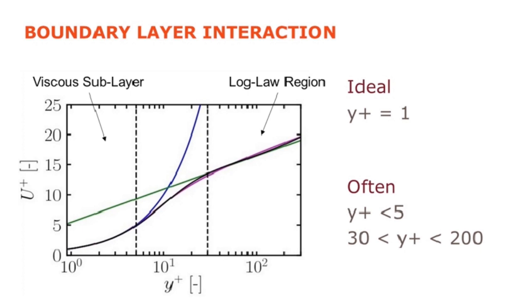Whereas if we target a y-plus value between 30 and 200, then we place our cell in the log-law region shown on the right. Here, CFD code uses the green curve to model the observed behavior shown in black. Therefore, what we are doing when we construct our mesh is to try and place our y-plus value in the viscous sublayer less than 5, or in the log-law region between 30 and 200. The reason we do this is to ensure that the solution is accurate.